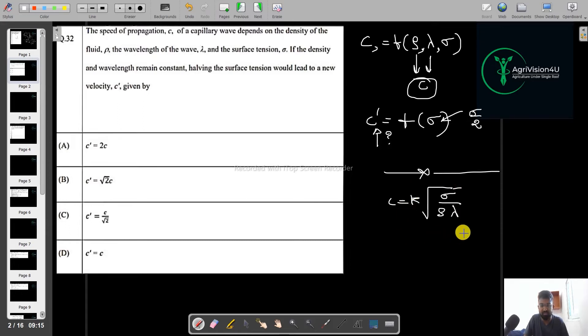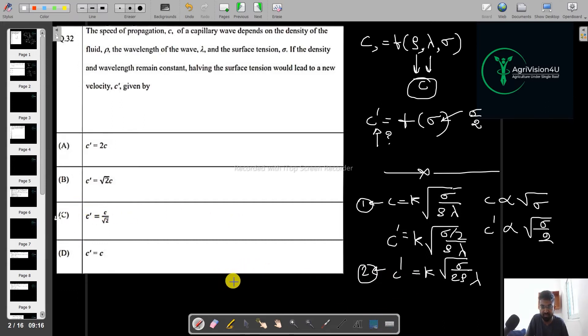Since we know all the things are constant except sigma, so we can say that C is directly proportional to the sigma and C dash proportional to the sigma by 2. So what changes we get? We will simply put sigma by 2 rho lambda. And ultimately we will get C equals K sigma by 2 rho lambda. So if we just simply divide this equation 1 with this equation 2, you will get the answer option C. Option C is the required answer for that. Let us go to the next question.